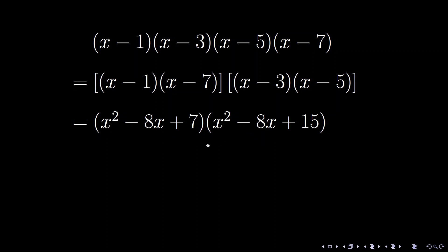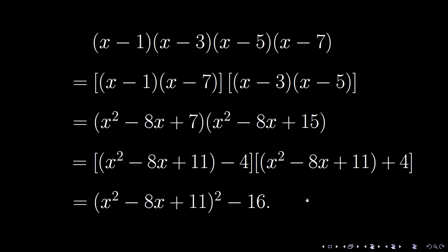The average of 7 and 15 is 11. So it can be rewritten as x squared minus 8x plus 11 minus 4 times x squared minus 8x plus 11 plus 4. It ends up with x squared minus 8x plus 11 squared minus 4 squared.